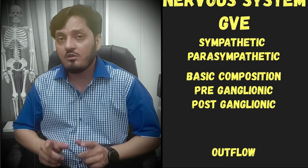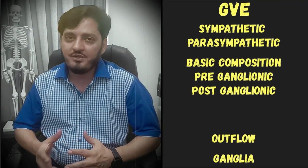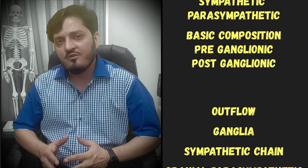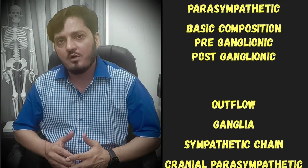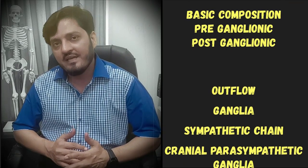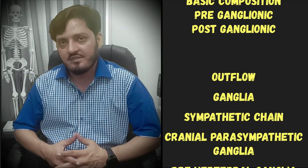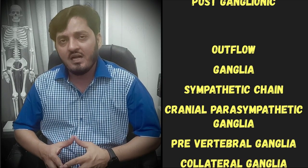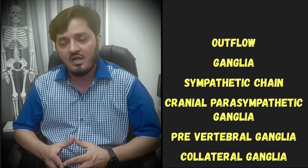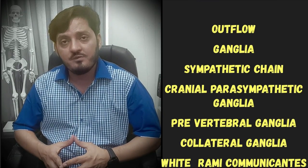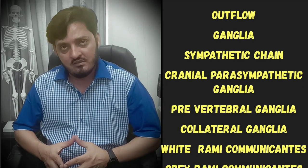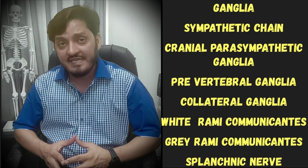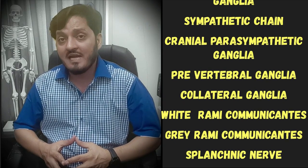The autonomic nervous system has many tricky and difficult concepts. I'll teach in a way that first I'll talk about the simple concepts and then move to the advanced concepts. Note down the important concepts we'll cover in this lecture. I'll talk about the outflow of the autonomic nervous system and then the ganglia in the form of the sympathetic chain, the cranial parasympathetic ganglia, and the collateral ganglia.